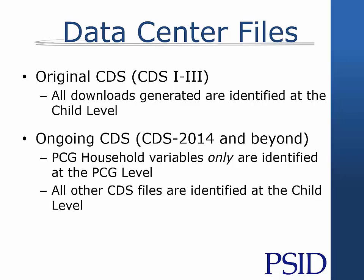For the original CDS, collected from 1997 through 2007, all generated datasets will be identified at the child level, meaning that the 1968 ID and person number on the files will be that of the child in the CDS. For the ongoing CDS, collected in 2014 and beyond, all files except for the standalone PCG household file will also be identified at the child level. However, if you download variables that are only from the PCG household file, you will get a dataset identified at the PCG level, meaning that the 1968 ID and person number on the file will be that of the PCG in CDS 2014. Please note that if multiple CDS files are downloaded, it will still be identified at the child level. For more information on the specifics of the data structure of the ongoing CDS, please see the web tutorial Introduction to the 2014 Child Development Supplement.